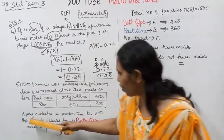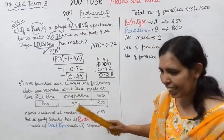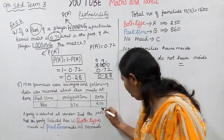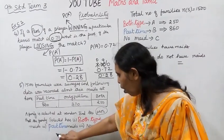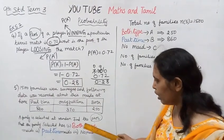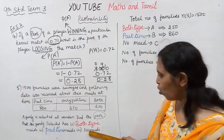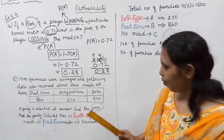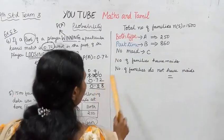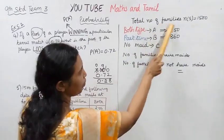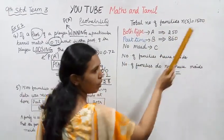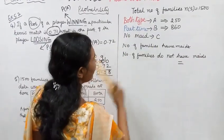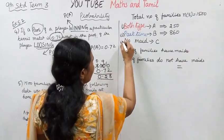A family is selected at random. Find the probability that the selected family has: first, both type maids; second, part-time maids; third, no maids. We need to find the probability for both type maids, part-time maids, and no maids.